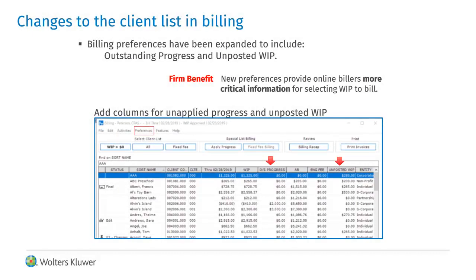There are three enhancements to the billing module. The client list in billing includes user preferences for the client list columns. These options now include outstanding progress amounts. NetWIP is always displayed in the WIP column, and any unposted WIP for the client is a preference item.